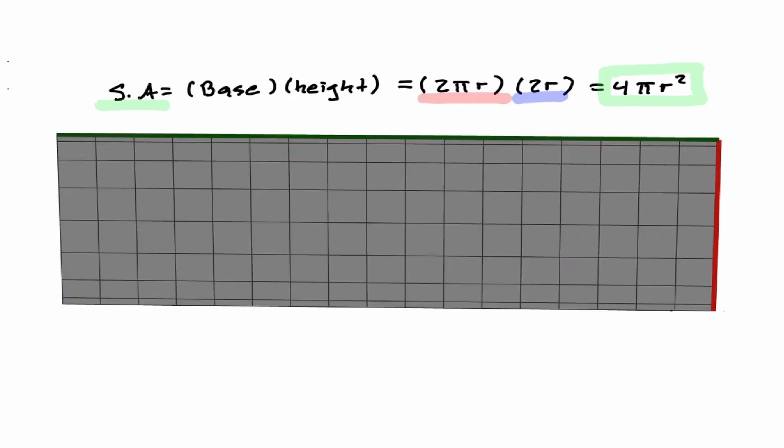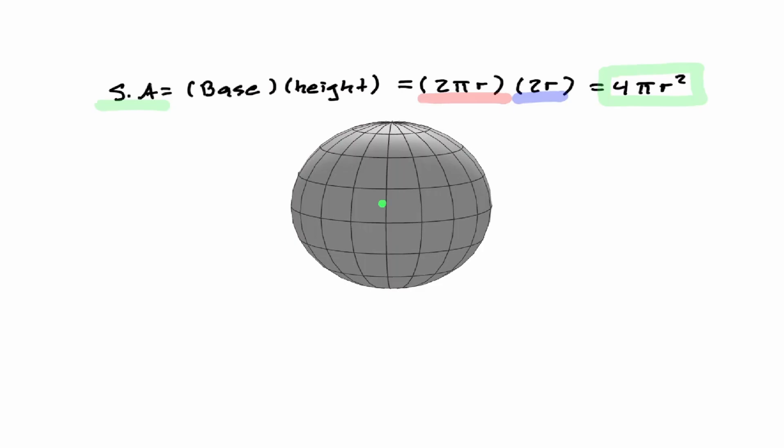So given any sphere, if we're able to define the radius of this sphere, we can just plug it in to the formula of 4πr² and we will always obtain the surface area of this sphere. Let's take a look at one example.